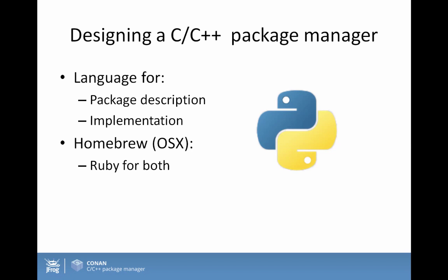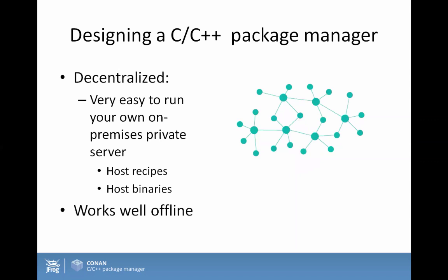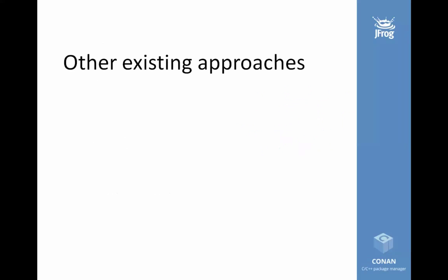Finally, one thing a package manager should implement for C and C++ is to be decentralized — just like Git. You should be able to run your own on-premises private server easily, retrieve artifacts from different servers, and host your pre-compiled binaries on those servers. Similarly, a package manager must work very well offline — if you don't have a connection to the servers but your packages are already installed locally, everything should still work.